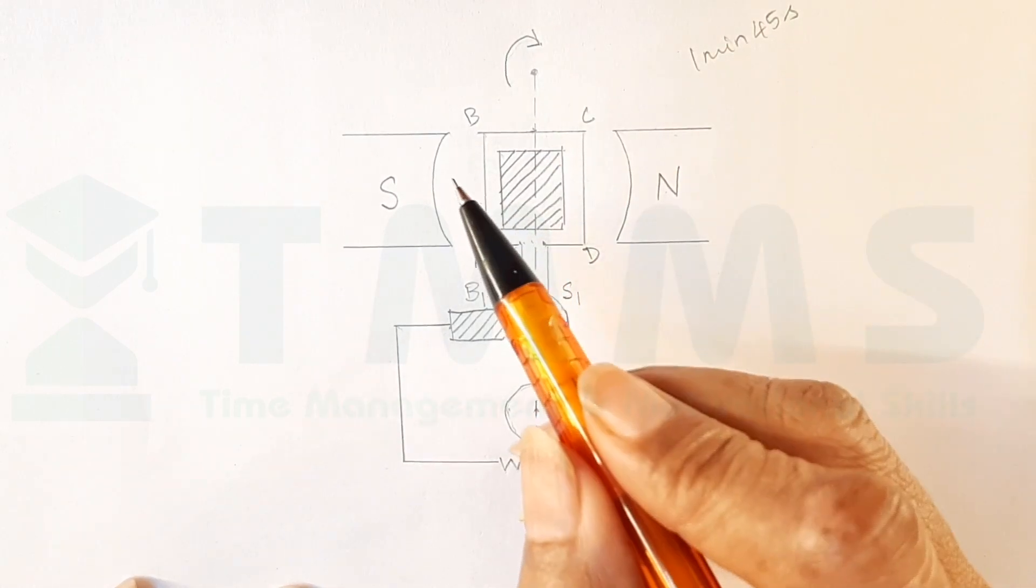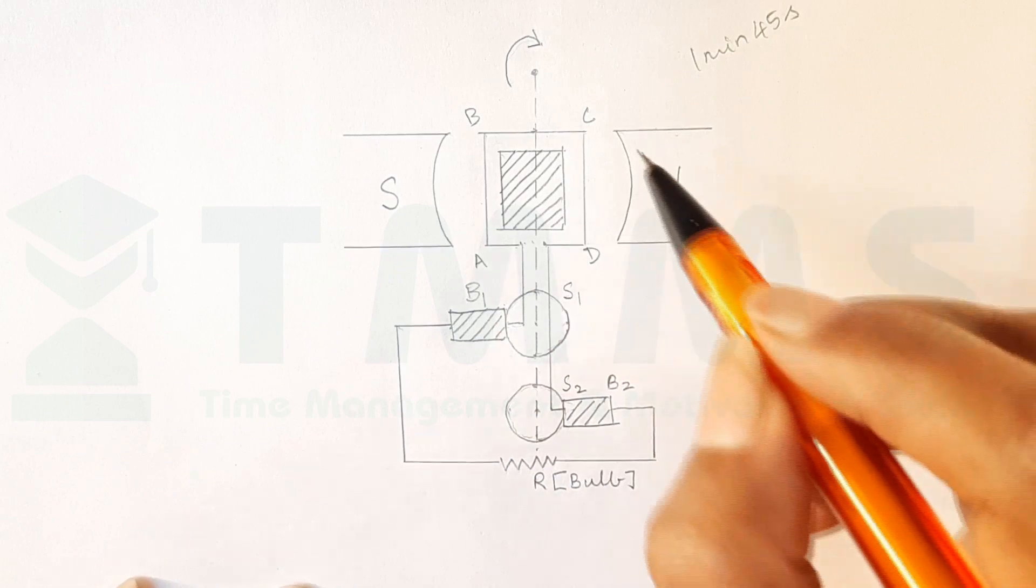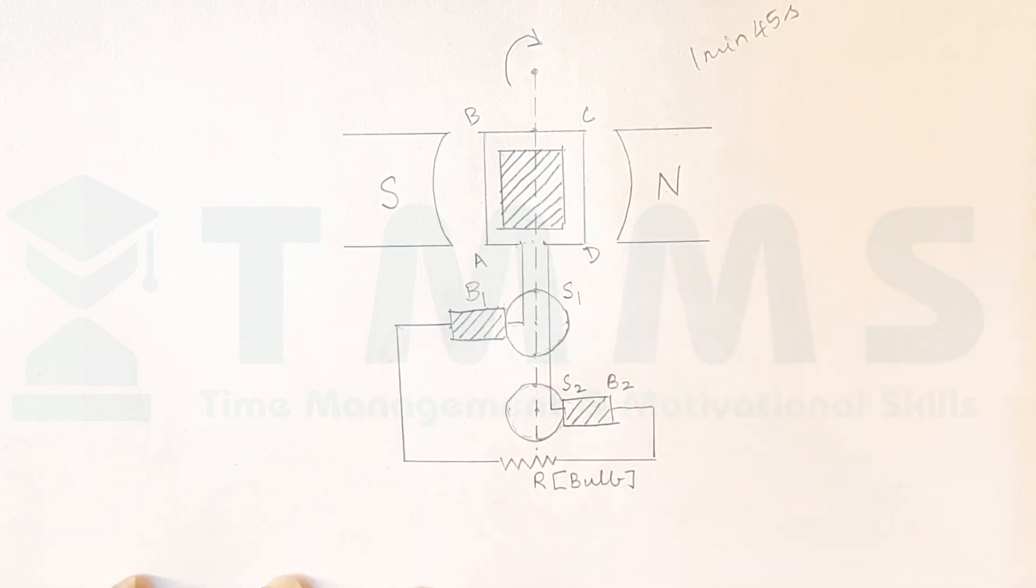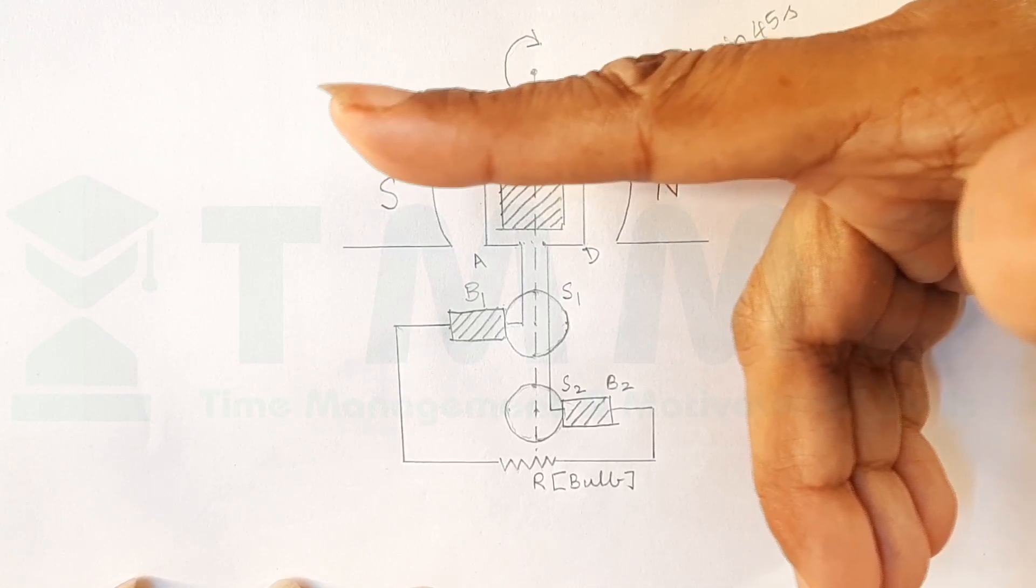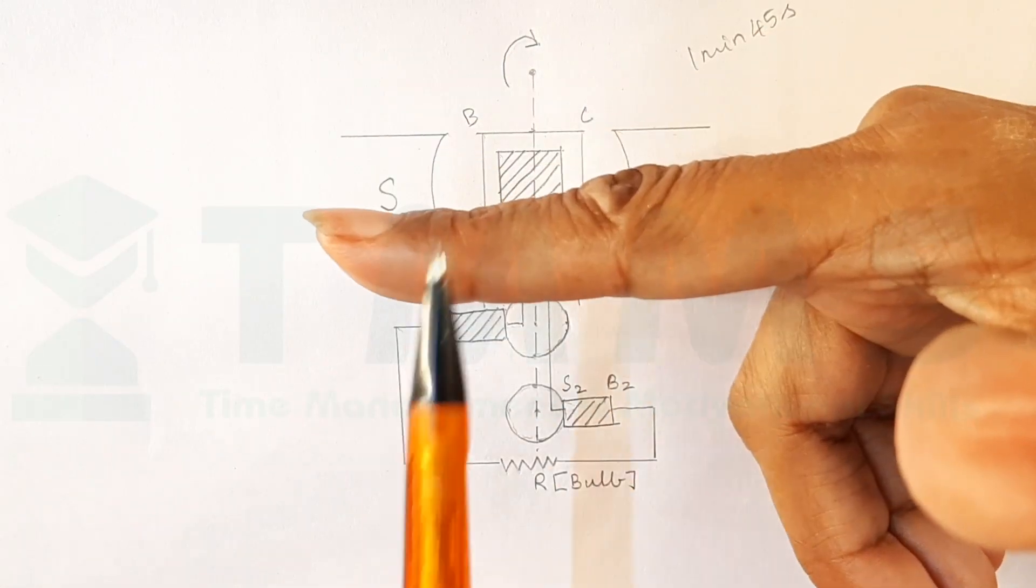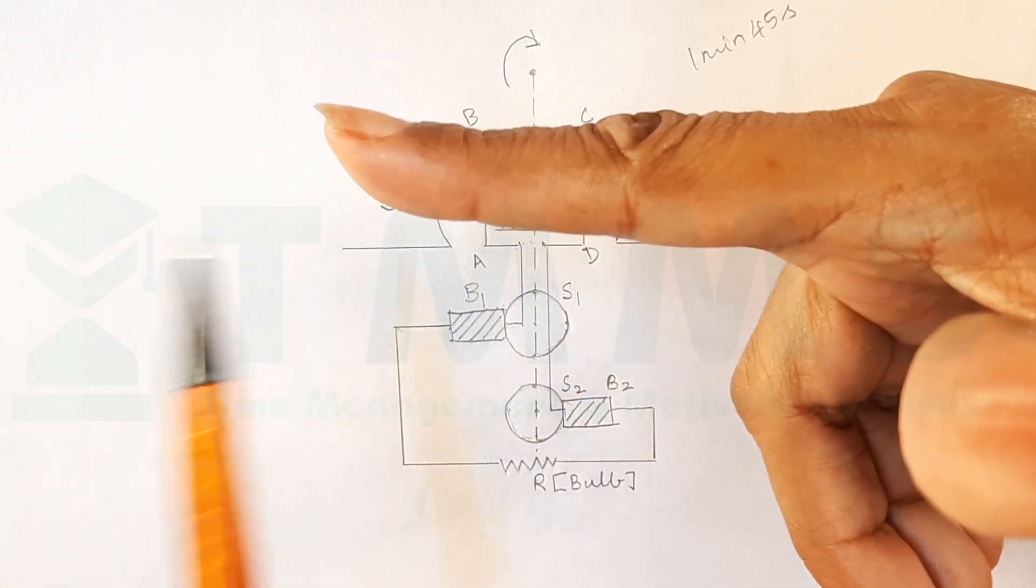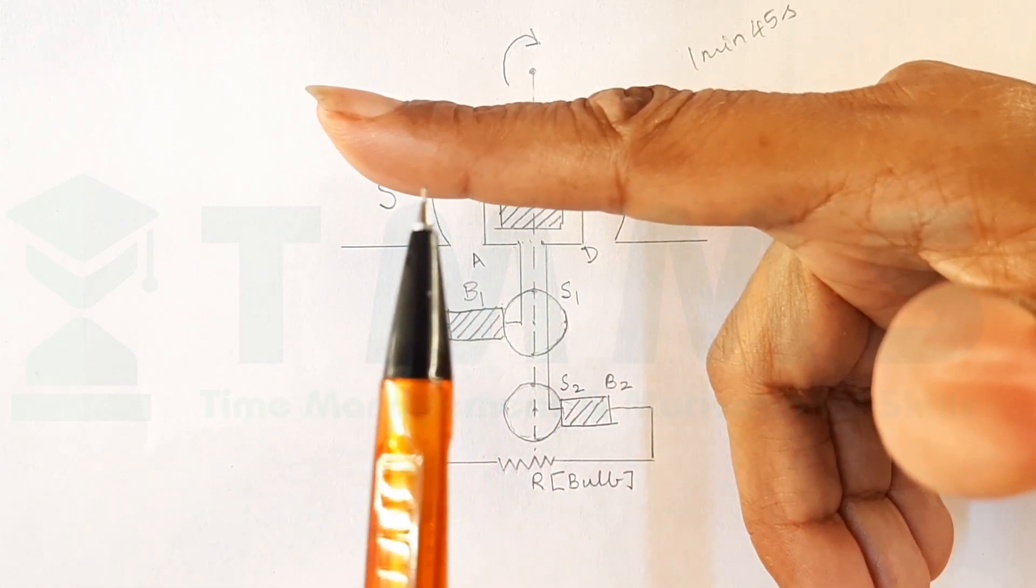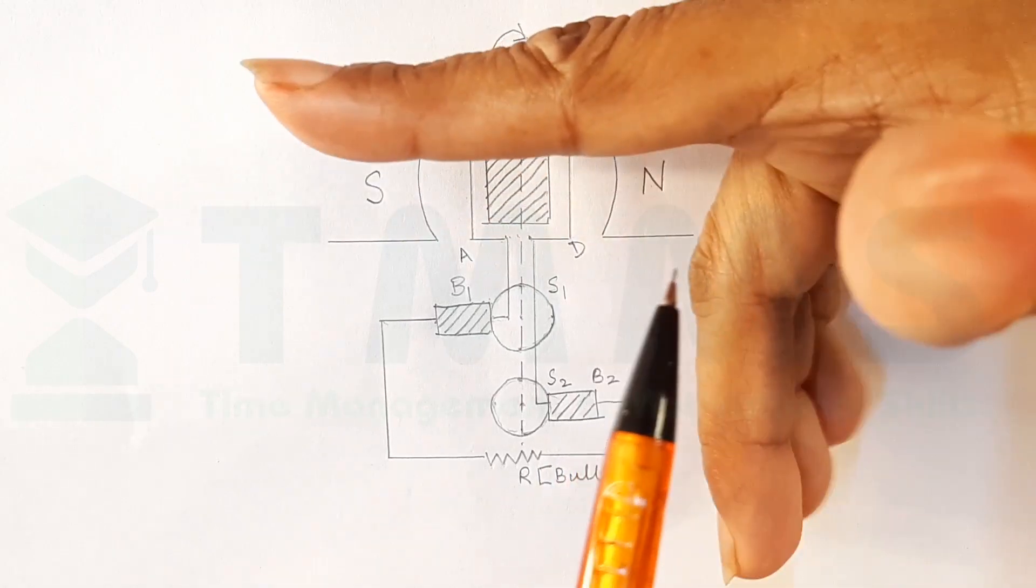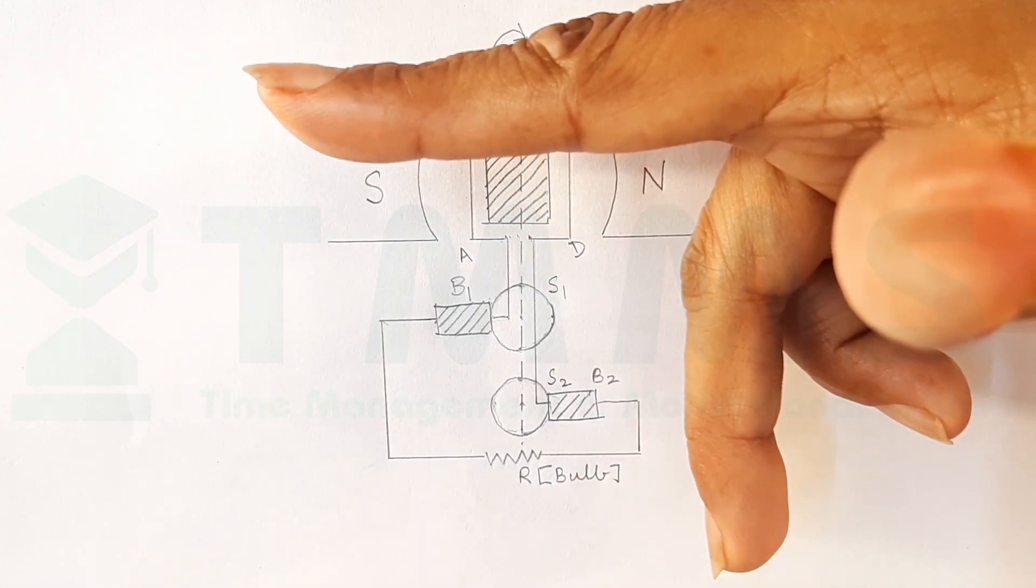So, AB is coming out of the plane of the paper. CD is going into the plane of the paper. And so, we use Fleming's right hand rule. And we have the forefinger. This forefinger is not to south direction. And you can see this thumb is in the direction of AB coming up.